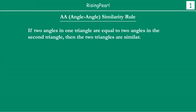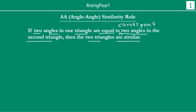So what do we mean by this theorem? What this is telling us is: if two angles in one triangle are equal to their corresponding two angles in the second triangle, then the two triangles are similar.